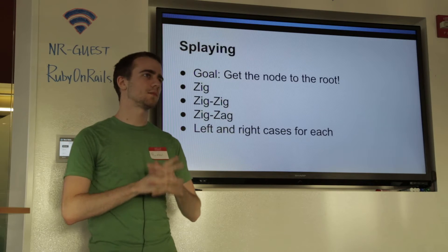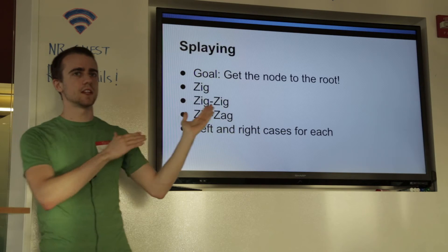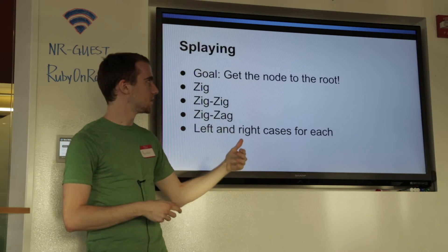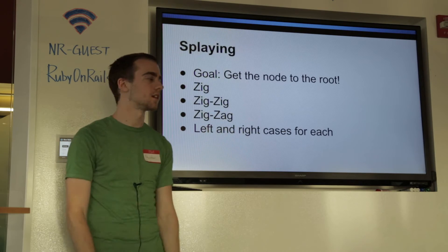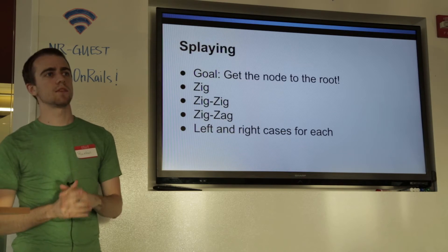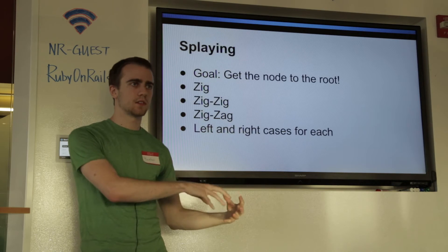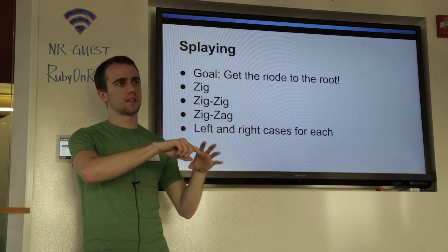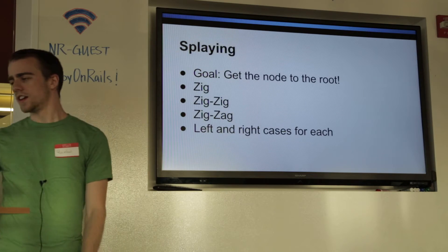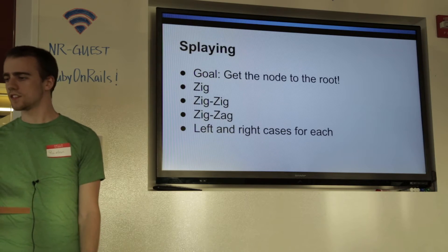A splay operation can be composed of three things, and they each have left and right variants. The goal of each splaying operation is to get the node to the top of the subtree you're working on. So if you're splaying the bottom left of a subtree it'll go to the top. You can just keep applying this operation to get the node to the top of the tree. It'll kind of break down if you try to splay a node that's not in the tree, and that sounds scary.